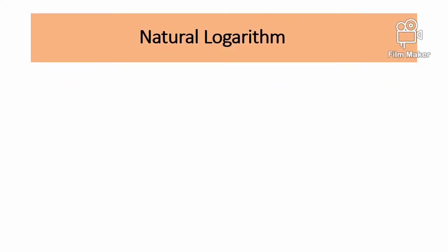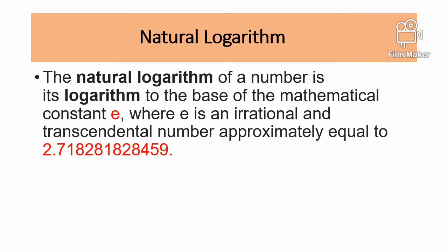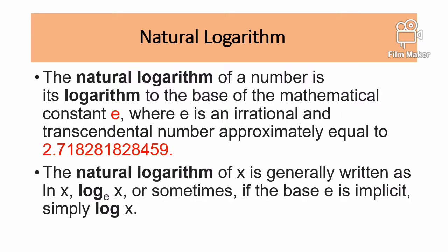Natural logarithm: The natural logarithm of a number is its logarithm to the base of the mathematical constant e, where e is an irrational and transcendental number approximately equal to 2.718281828459. The natural logarithm of x is generally written as ln(x), logarithm base e of x, or sometimes, if the base e is implicit, simply logarithm of x.